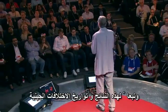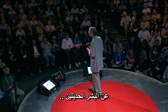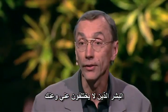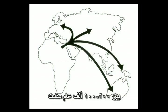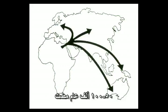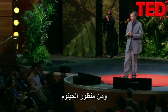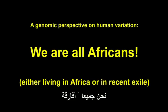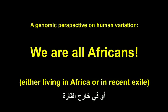Together with methods to date these genetic differences, this has led to the insight that modern humans — humans essentially indistinguishable from you and me — evolved in Africa quite recently, between 100,000 and 200,000 years ago, and later, around 150,000 years ago or so, went out of Africa to colonize the rest of the world. So from a genomic perspective, we are all Africans — we either live inside Africa today or in quite recent exile.